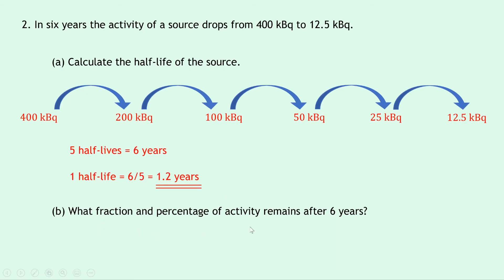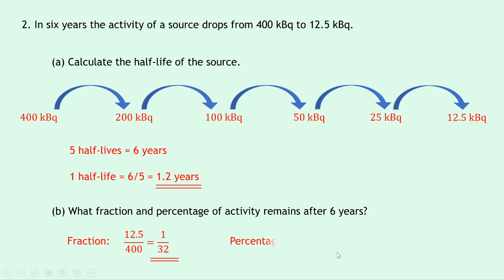Part B: what fraction and percentage of activity remains after 6 years? For the fraction, we take the final activity divided by the initial activity: 12.5 ÷ 400, which simplifies to 1/32. Our percentage is the final activity divided by the initial activity times 100: 12.5 ÷ 400 × 100 = 3.1%. This is the same as 1/32 × 100. So only 3.1% of the original activity remains after 6 years.